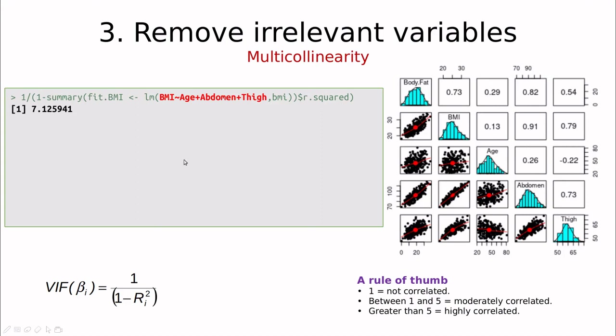So as you can see here I'm using this formula so this is 1 divided by 1 minus R squared. So for BMI you can see that this number is 7 so it's greater than 5 so I would say that BMI is too correlated with your predictors so maybe we should consider removing that.